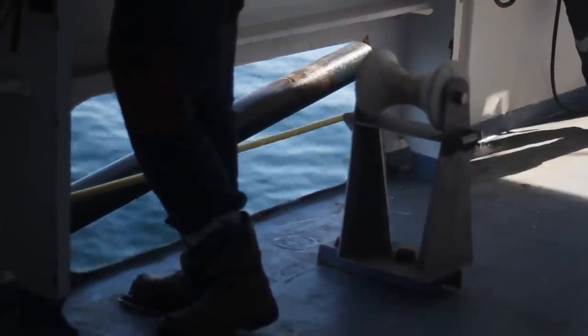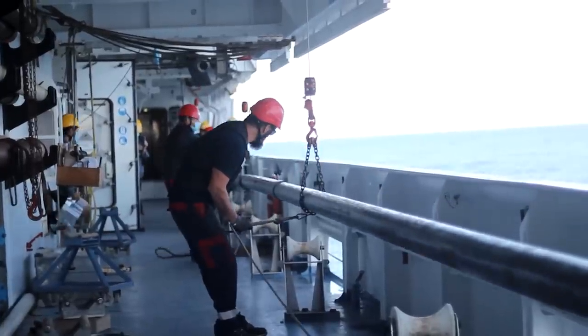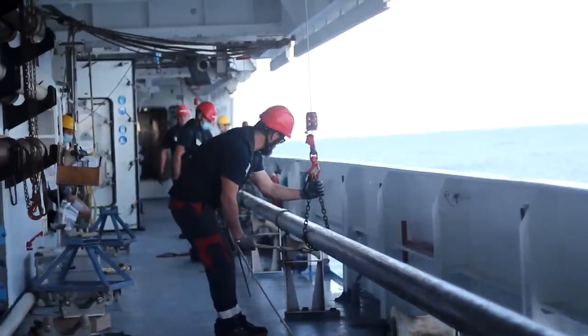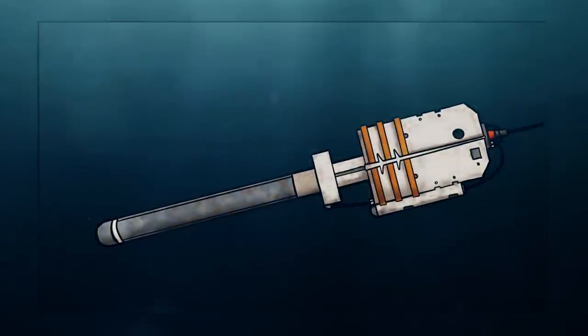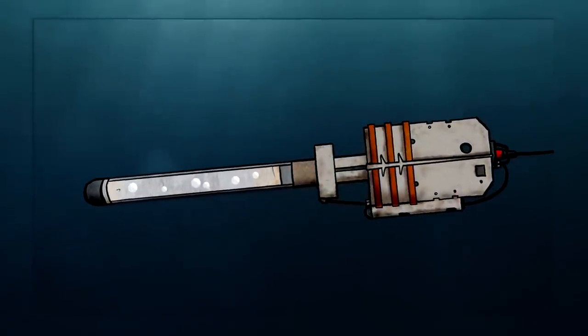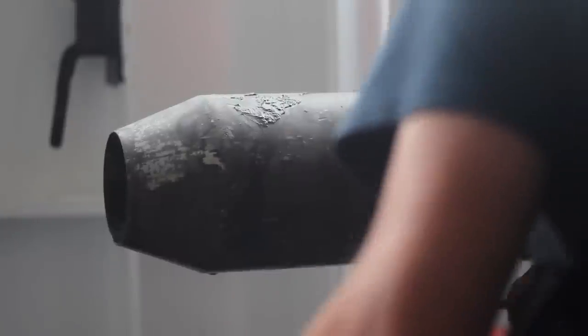Une fois le prélèvement effectué et le tube remonté sur le navire, il doit alors minutieusement être ouvert par l'équipage. Pourquoi cela ? Tout simplement car si notre échantillon de sol contient bien du gaz, celui-ci a pu se dilater lors de sa remontée vers la surface. Dans ces conditions, l'ogive de la carotte peut parfois finir par s'envoler à son ouverture, telle une bouteille de champagne.